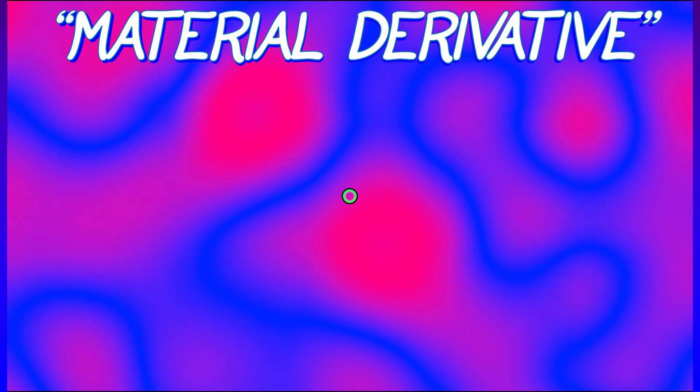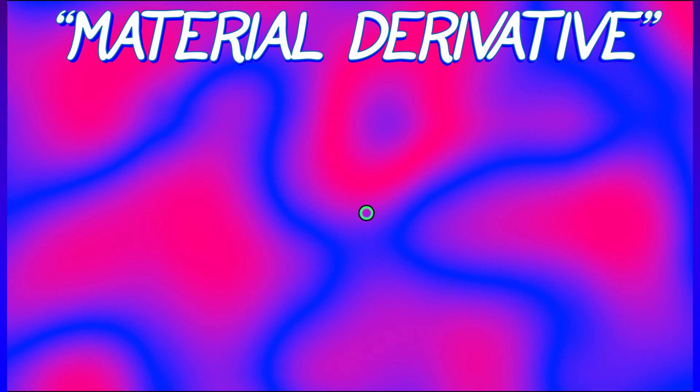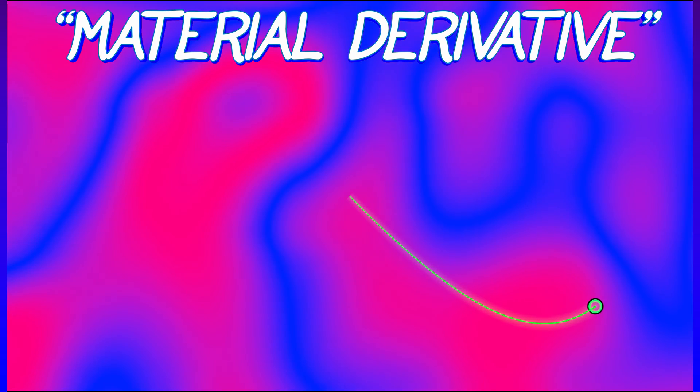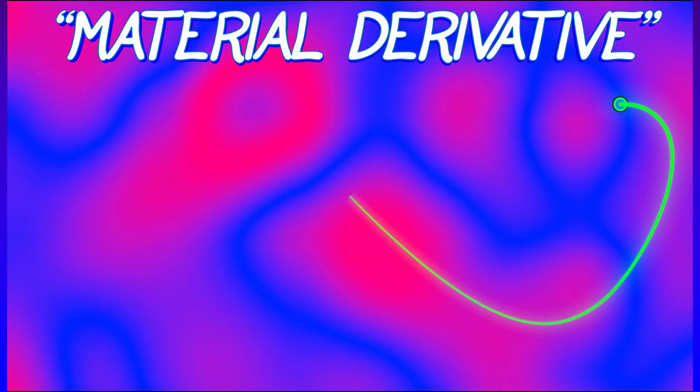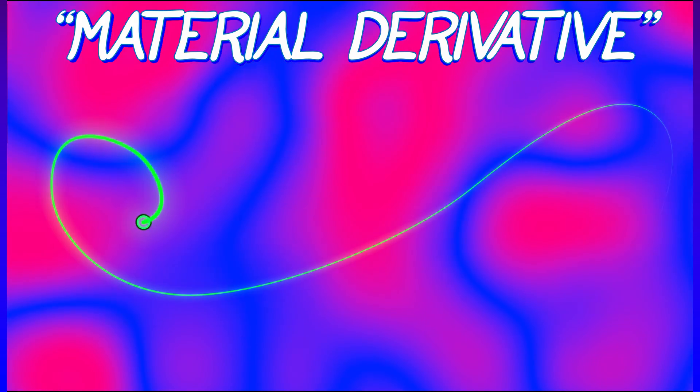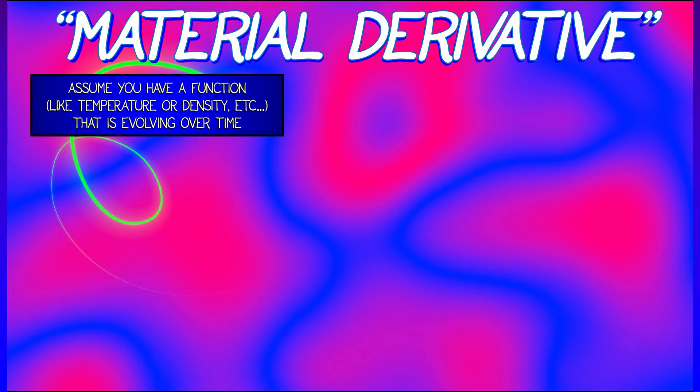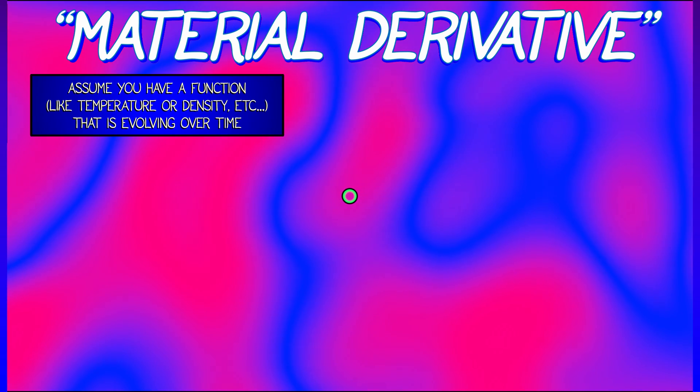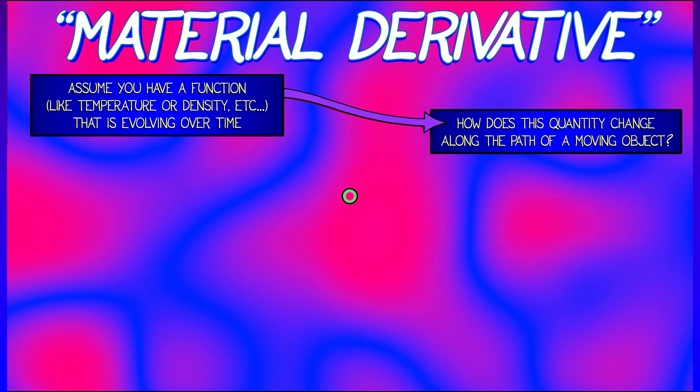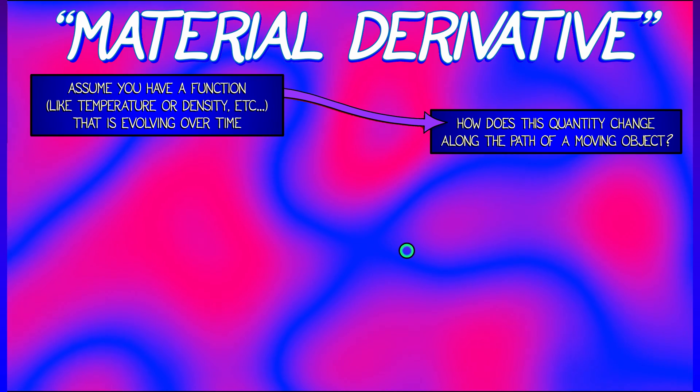Let's say that you have some field, some value that is changing over space, and you have a particle that is moving around through that field. The material derivative measures the rate of change of that field along the particle's path. So let's say that this is something like temperature or density, something that's evolving over time and changes from place to place. How does that quantity change along the path of this moving object, of this particle?